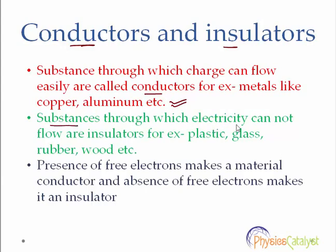Substances through which electric charges cannot flow are called insulators. A few examples of insulating materials are glass, rubber, mica, plastic, etc. It is the presence or absence of free electrons in a material that makes it a conductor or an insulator. Conductors have free electrons which are loosely held by the nuclei of their atoms, whereas insulators do not have free electrons, as in the case of insulators, electrons are strongly held by the nuclei of their atoms.